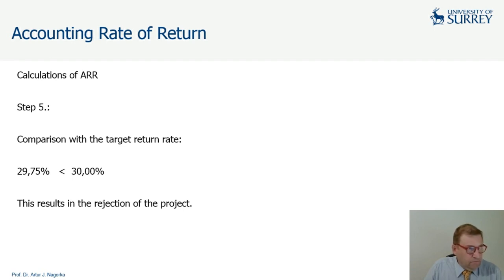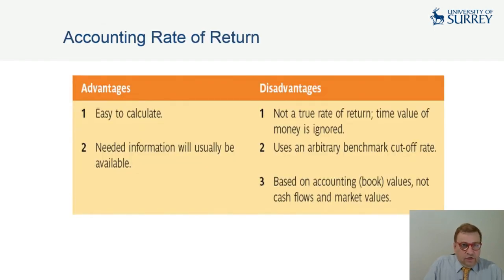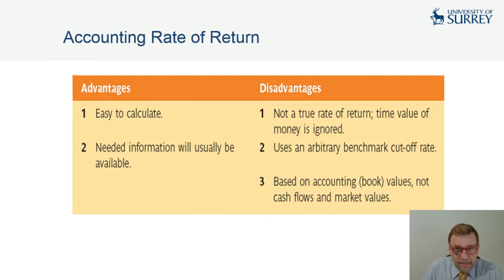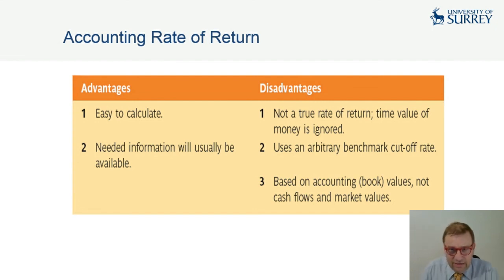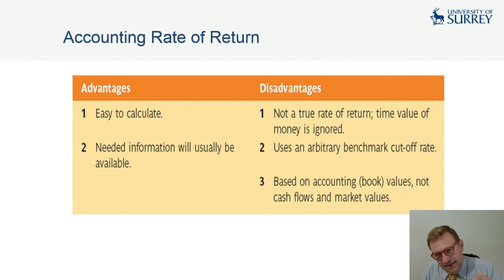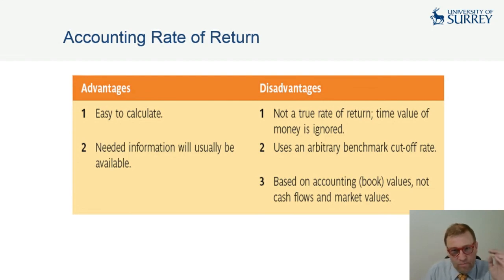Briefly, the accounting rate of return is fairly easy to calculate, and the information used is normally easily available from the financial statements. However, there are disadvantages: it is not a true rate of return because the time value of money is completely ignored; it has an arbitrary cut-off rate; and it is based on book values, which is a weakness.